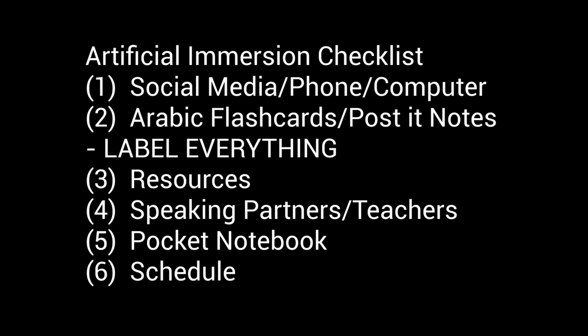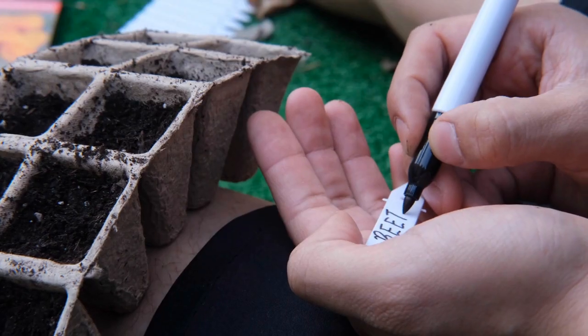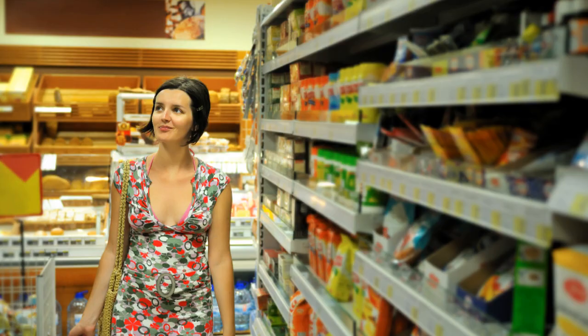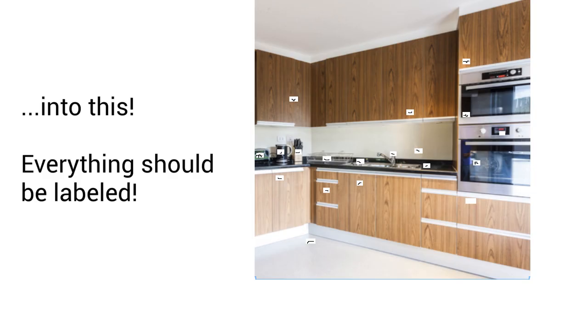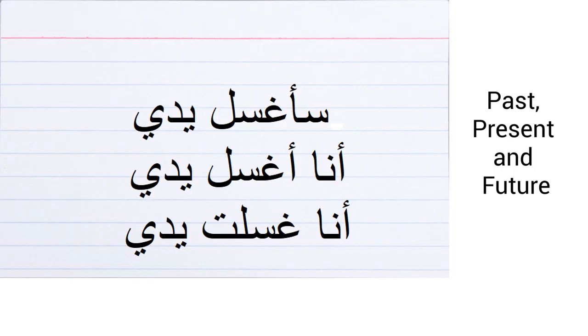Item number two: your Arabic flashcards and post-it notes. It doesn't matter what you put up, as long as it's labeled. We are going to label everything. Think of your house as basically a supermarket where everything has a price tag and a label. Start with each room — for example, your kitchen. Label everything you can figure out the name for. We also want to create cards that have actual sentences — for instance: 'I washed my hands,' 'I am washing my hands,' 'I will wash my hands.'